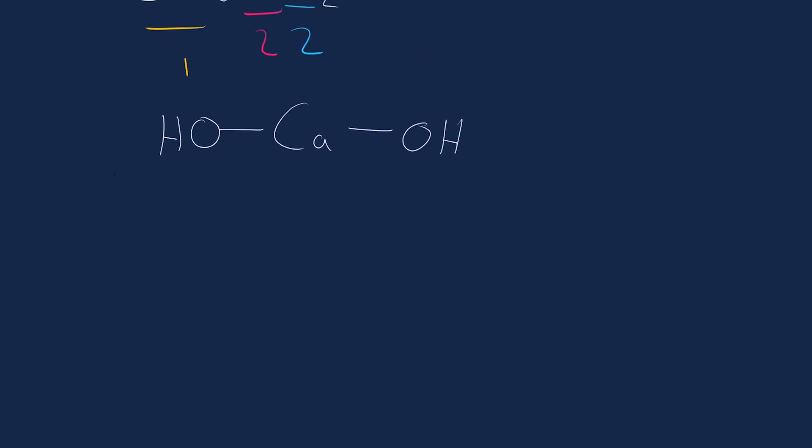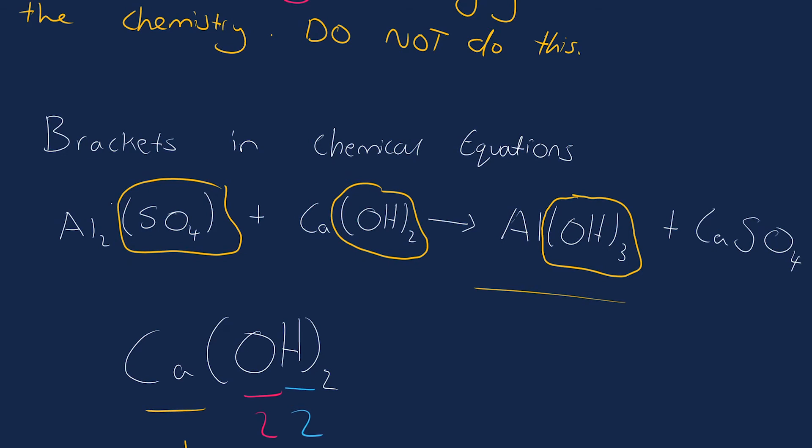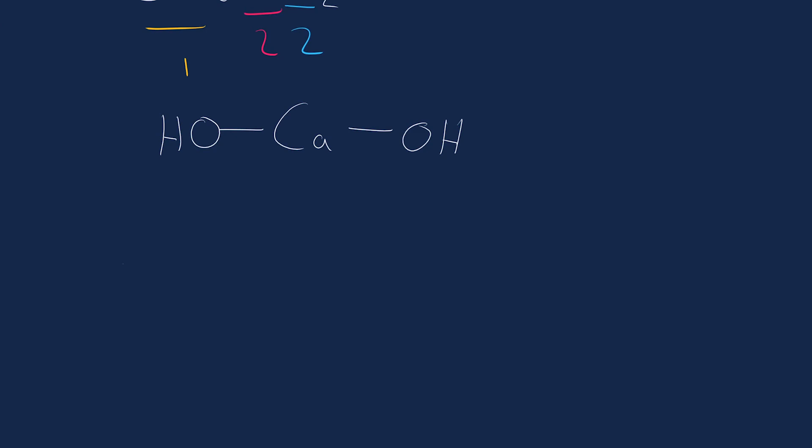We'll look at this for the other reactant, aluminum sulfate. This is Al2(SO4)3. What that means is for each one of these molecules, we have two aluminums and three lots of everything in the brackets. So we have three lots of SO4, three sulfur and three times four, twelve oxygen in one molecule.